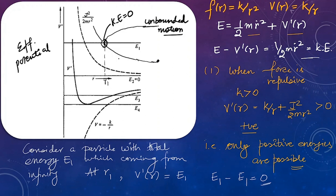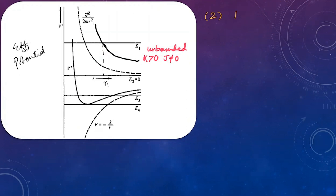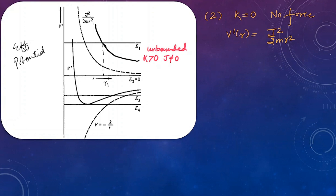As you increase the energy level, the turning point shifts accordingly — the motion remains unbounded for repulsive force where K is greater than zero and J is not equal to zero. Moving to the next case: if K equals zero, there is no force, and the effective potential becomes J-squared over 2mR-squared. This is shown by the dashed line. For a particle with total energy E2, the turning point occurs at a smaller value of R, but the motion remains unbounded.